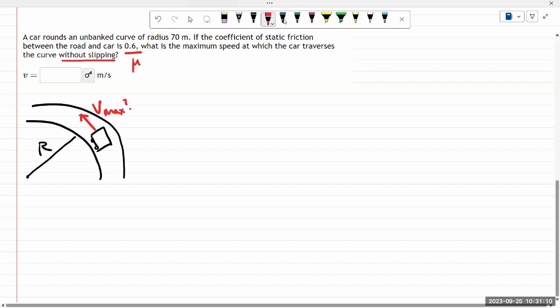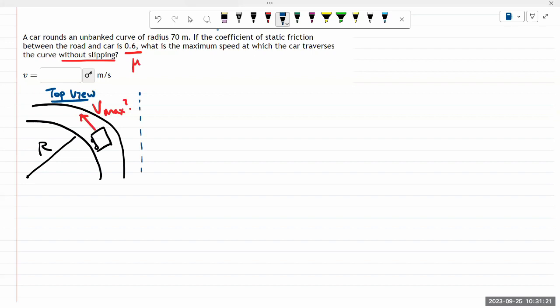I don't think this top view is the view that I want to draw my free body diagram in. It's going to be difficult to draw all the relevant forces in this view. So I'm going to use a slightly different view. Let me call that a rear view. So I'm going to imagine that I'm looking at the car from the back. So this is the car. Here's the road. And the car's velocity would be going into the screen. That would be Vmax.